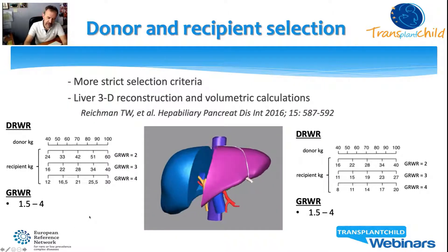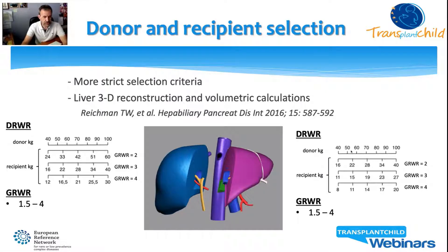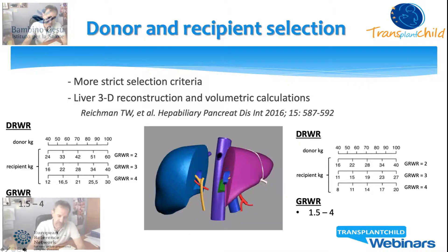More strict selection criteria are used for the full left full right split. Dimensional matching cannot rely on donor-to-recipient weight ratio, and donor CT scan with liver volume estimation is pivotal. The range of possible dimensional combinations is narrower and the risk of small-for-size syndrome is higher, especially when using the left lobe in large recipients. Suboptimal graft venous outflow and severe recipient portal hypertension can further increase this risk.